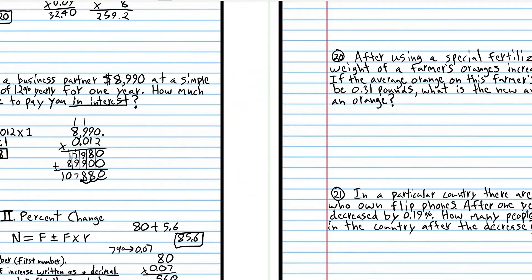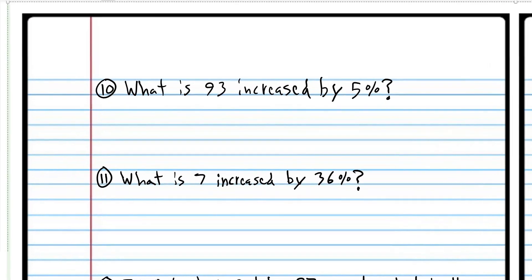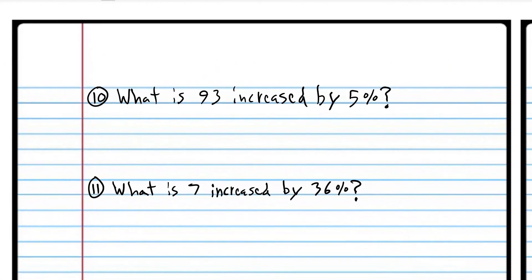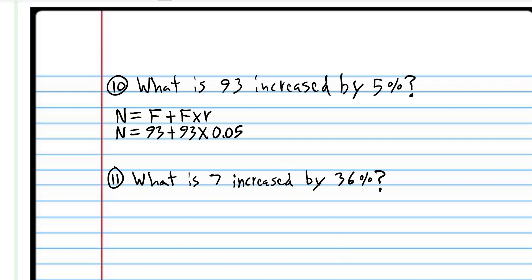What is 93 increased by 5%? We're going to use the formula: the number we're looking for equals F plus F times R. It's plus because we're doing an increase. Now plug in the numbers: F is 93 and 5% written as a decimal is 0.05. PEMDAS tells us to multiply first. We don't need to go over changing percent to decimal again — we just did that about 10 times.